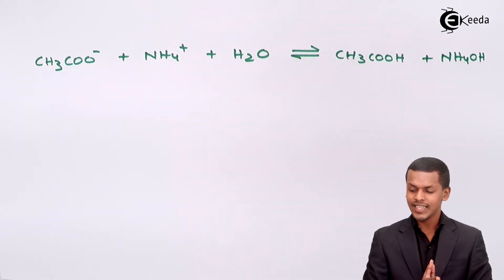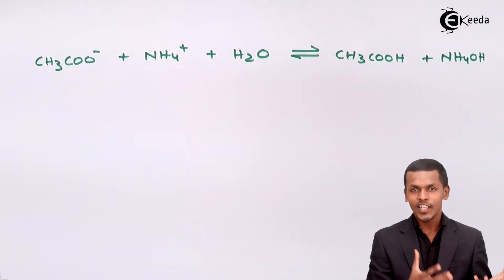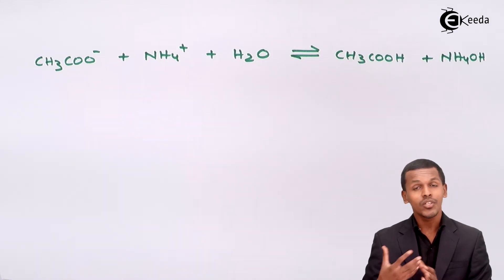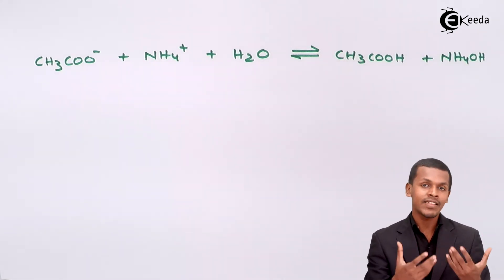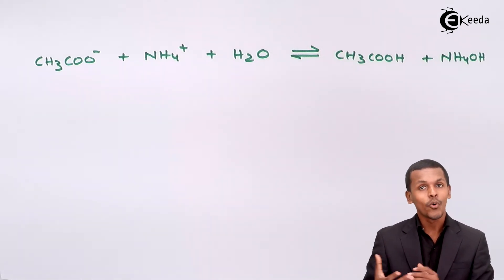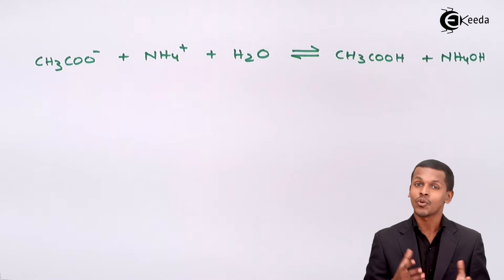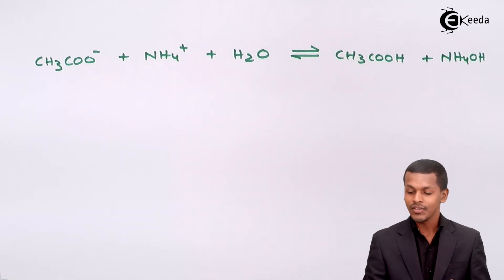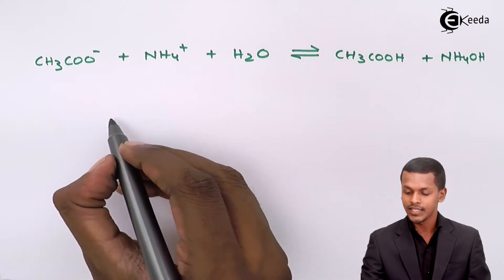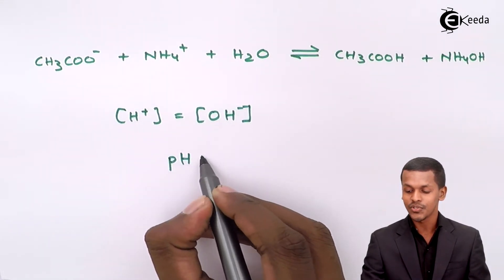Both the weak acid and weak base have been formed, and both have a similar extent to combine with their respective ions. The H⁺ ions utilized by the acetate ion and the OH⁻ ions utilized by NH₄⁺ will be the same. The extent of neutralization is equal, so the concentration of H⁺ and OH⁻ remain unchanged and both are the same — hence the solution is neutral, and pH equals 7.